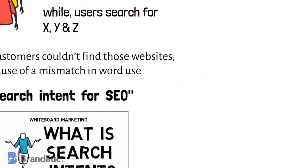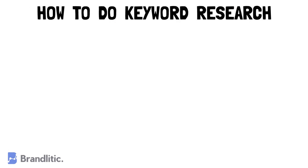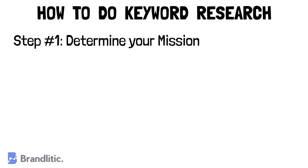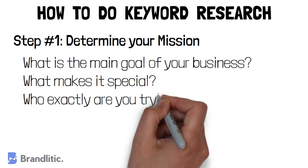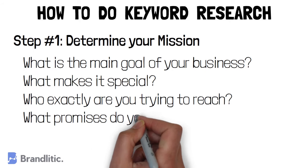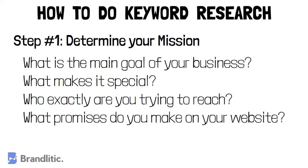Now let's learn how to do keyword research. To make the process easier, I've divided it into seven steps. Step 1: Determine your mission. Reflect on questions like: what is the main goal of your business or organization, what makes it special, who exactly are you trying to reach out to, and what promises do you make on your website?